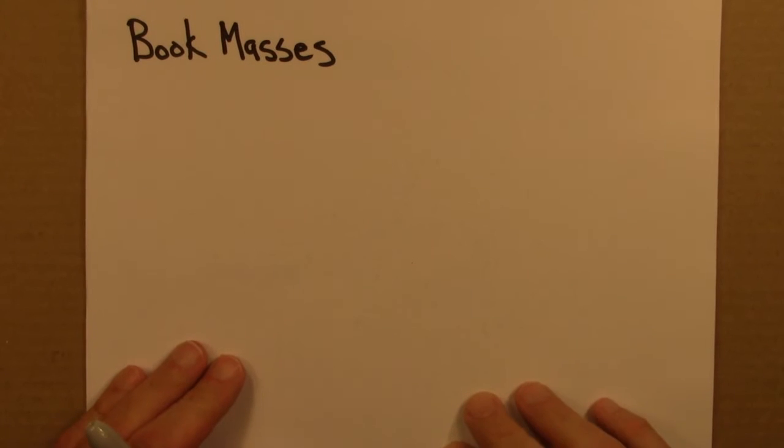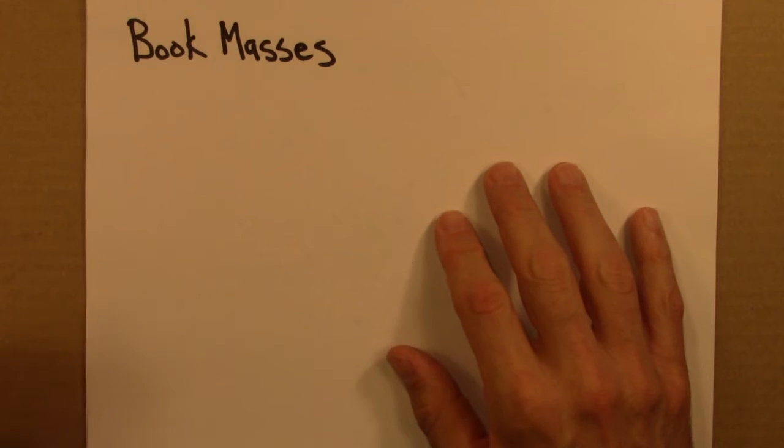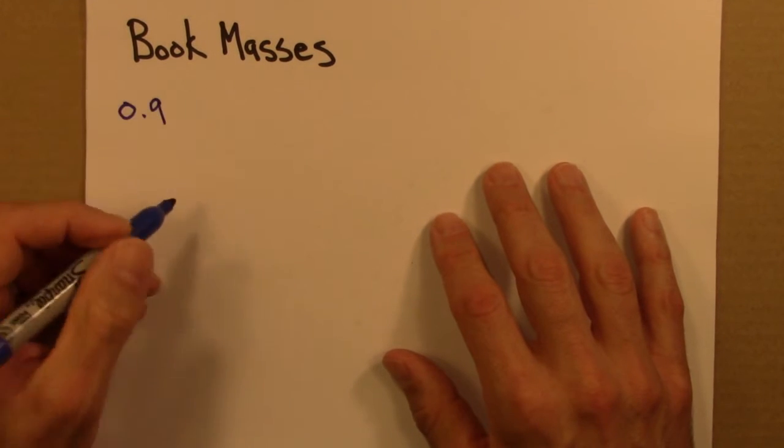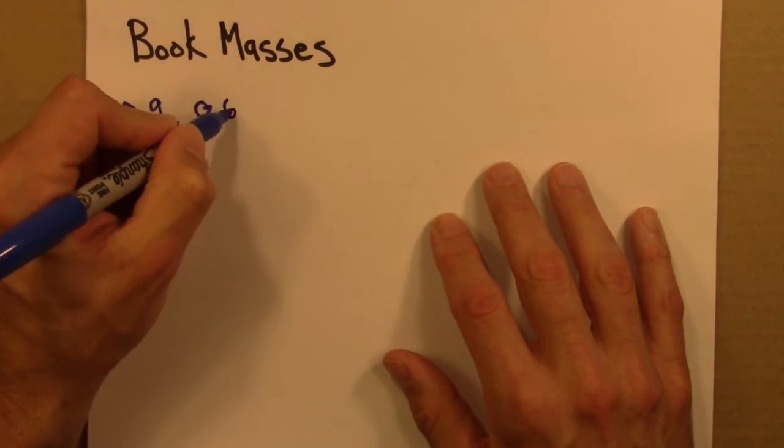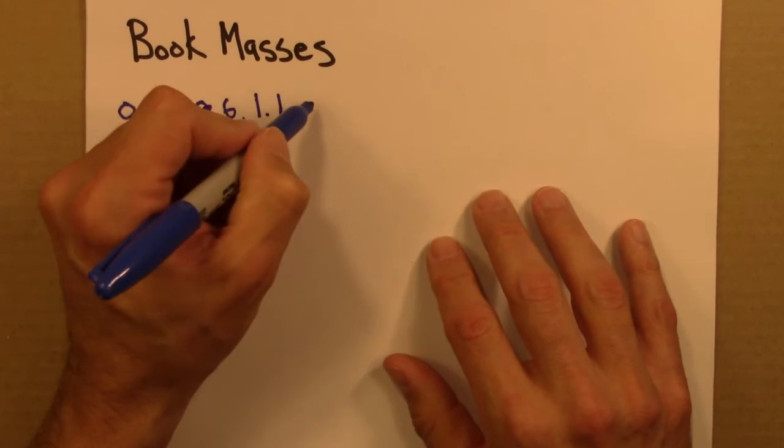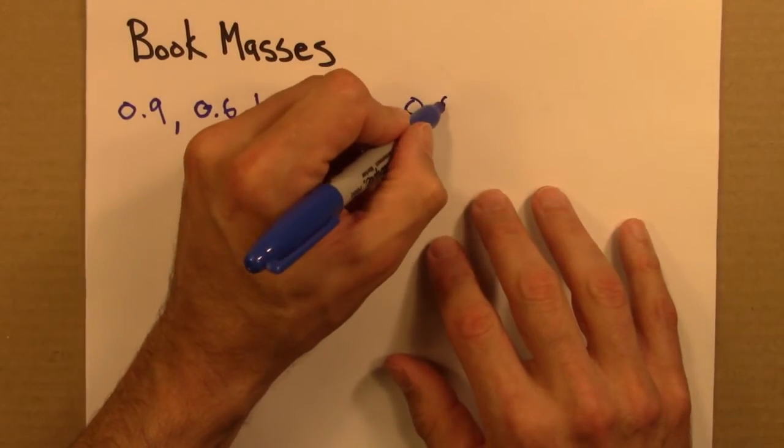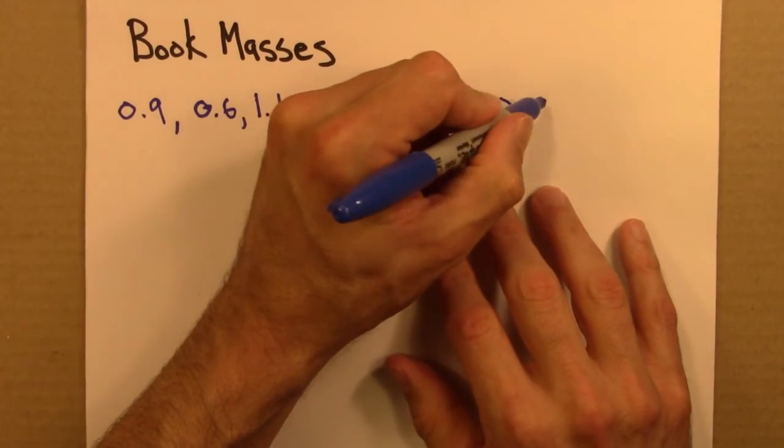So let's say I actually did this experiment and I started weighing all of my books. I would get a series of masses, weights. And let's say that maybe I would get one that would be 0.9. Let's imagine these are in pounds. I might get 0.6, 1.1, 1.05, 0.8, and maybe another 0.9.